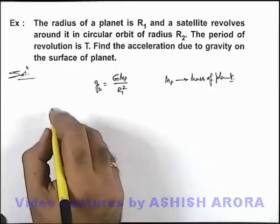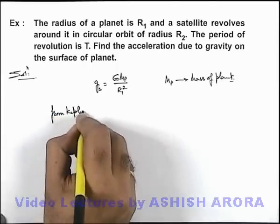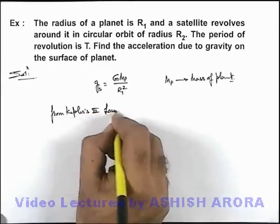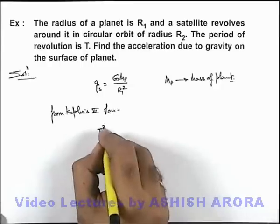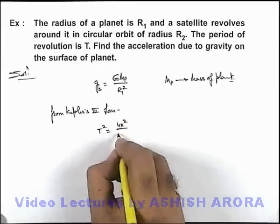As well as from Kepler's third law, we know that square of time period of revolution of any satellite is given as 4π² divided by GM_p.